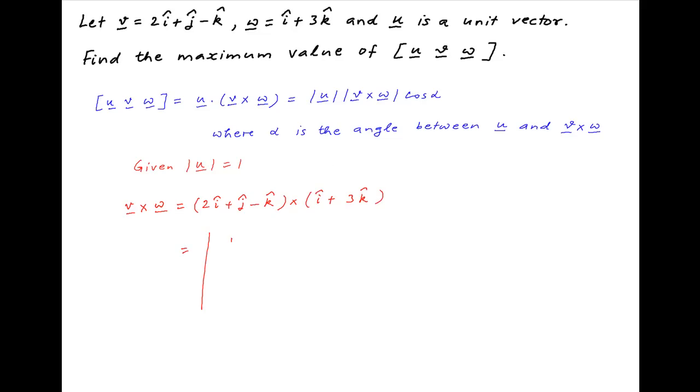This can be expressed in a determinant form. The first row is i, j, and k. The second row is the components of vector v, which are 2, 1, and minus 1. And the third row is the components of vector w, which are 1, 0, and 3.